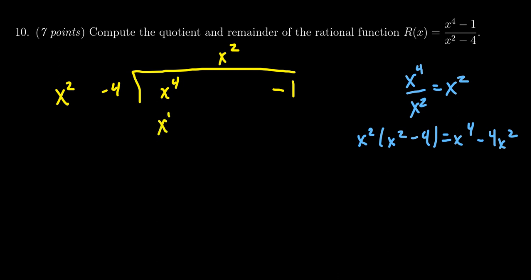This gives us x to the 4th minus 4x squared. We subtract this from above, so the x to the 4th will cancel out. These should always cancel out. There's no x cubed terms whatsoever. We have 0x squared minus minus 4x squared, which gives us positive 4x squared. Then bring down the negative 1.